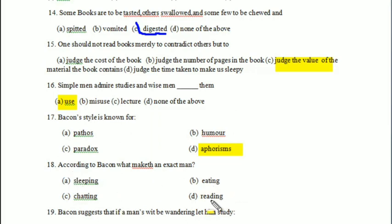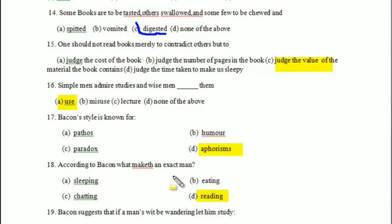The answer is 'writing makes an exact man.' There is no option for writing; reading is given, but the correct answer from Bacon is that writing makes an exact man, while reading makes a full man.